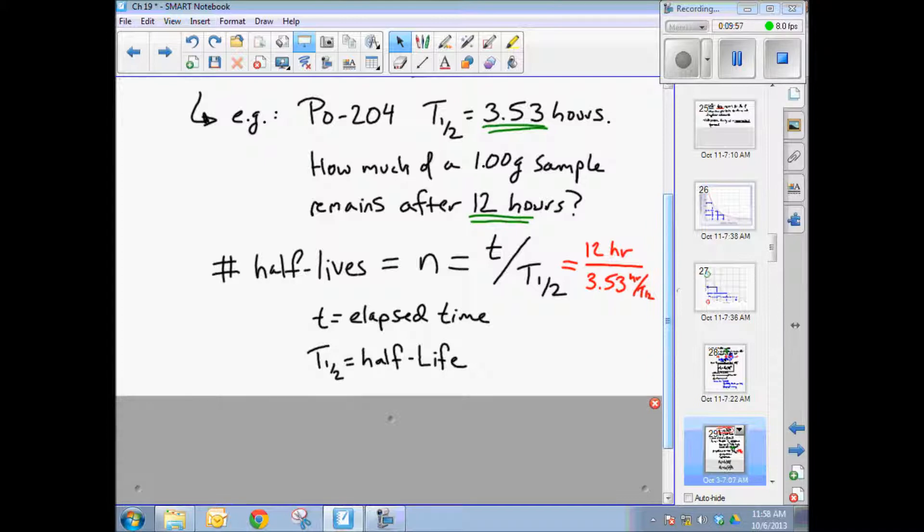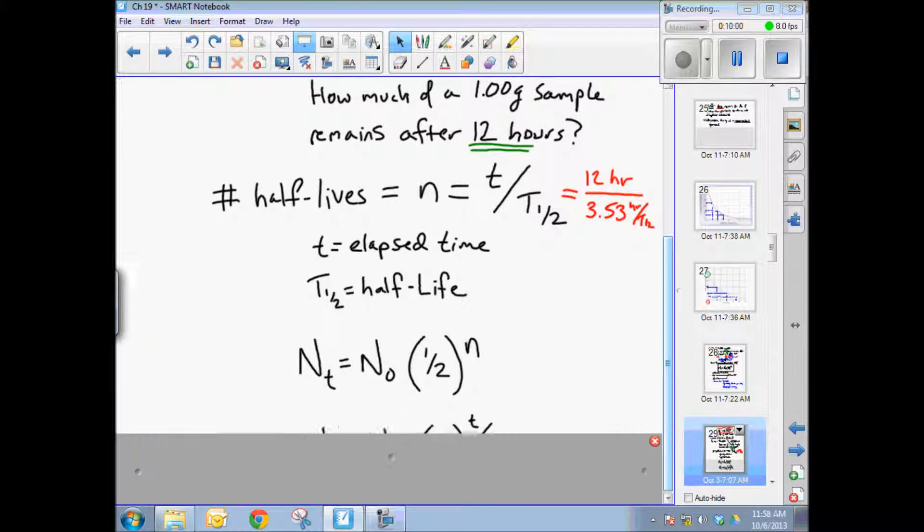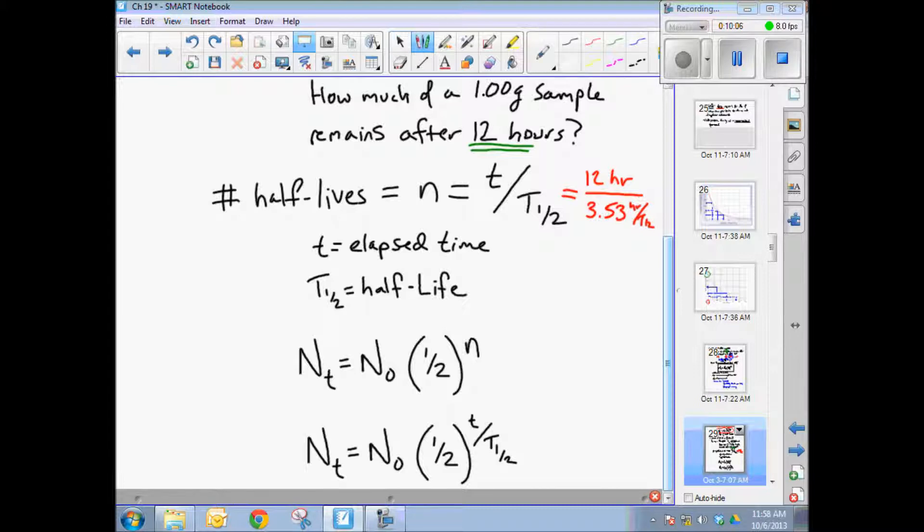So when we solve for this, we end up with, let's see here, what's the number? 3.40 numbers of half lives. We'll come back to this in just a second, 3.40 half lives.